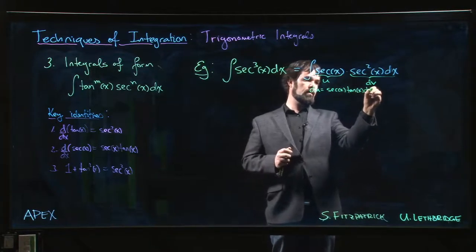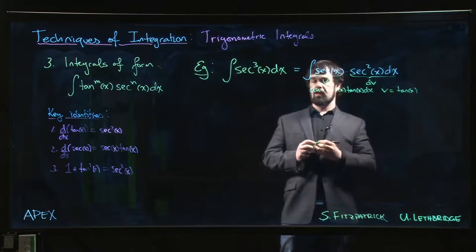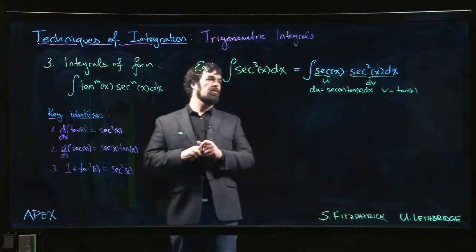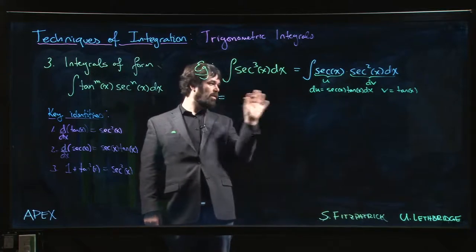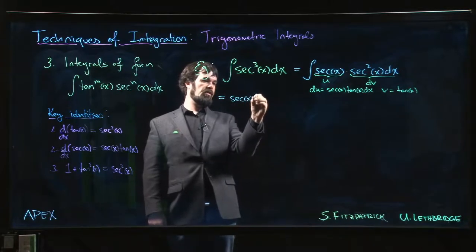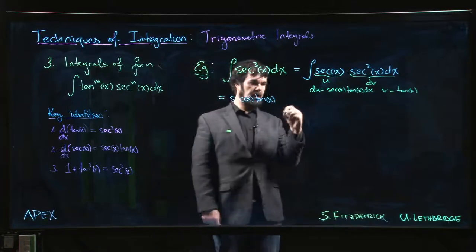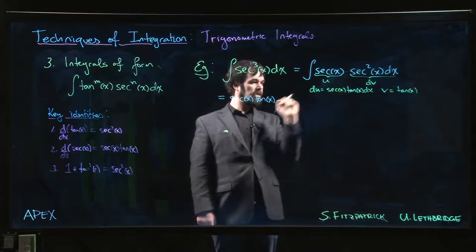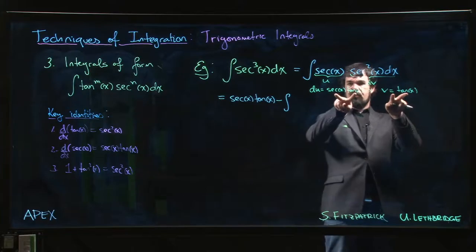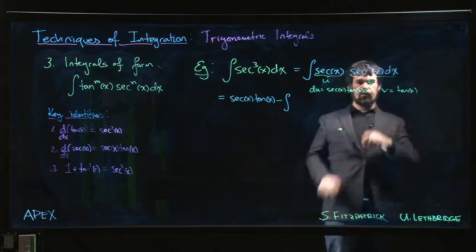That means du will be secant x tan x dx and v will simply be tan x. So what we get is u times v: secant x tan x minus the integral of v du. Keep an eye on what we get. Here's v, here's du. We multiply those together to get secant times tan times tan.